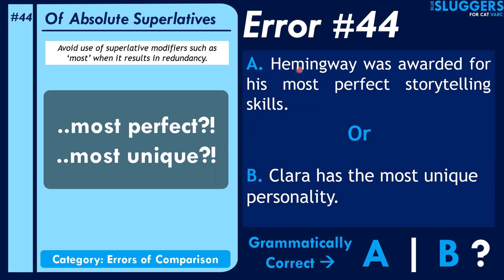Look at the sentence: 'Hemingway was awarded for his most perfect storytelling skills.' 'Most perfect' is redundant and does not make sense — you need to get rid of the modifier 'most' here. 'Clara has the most unique personality' — again, is redundant. So I hope that's clear. Both of these sentences are incorrect.